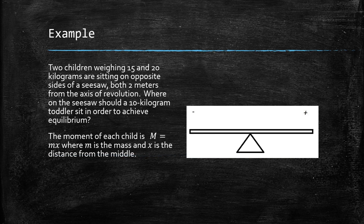For an example, let's say if we had two children weighing 15 and 20 kilograms sitting on opposite sides of a seesaw, where they're both 2 meters from the axis of revolution. The one weighing 15 kilograms is on the left of the picture and the one weighing 20 kilograms is to the right.